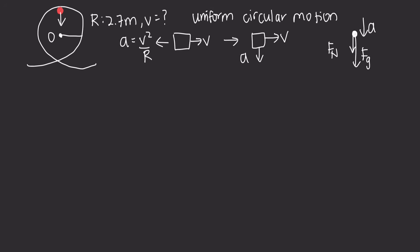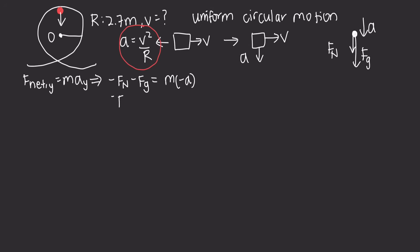Using Newton's second law for the y-components: F_net in the y-direction equals mass times acceleration in the y-direction. We get negative F_N minus F_g equals m times negative a. We include negative signs because all forces point downward. Substituting, we get negative F_N minus mg equals m times negative v squared over r, where v squared over r is the centripetal acceleration — the acceleration perpendicular to velocity that changes its direction.